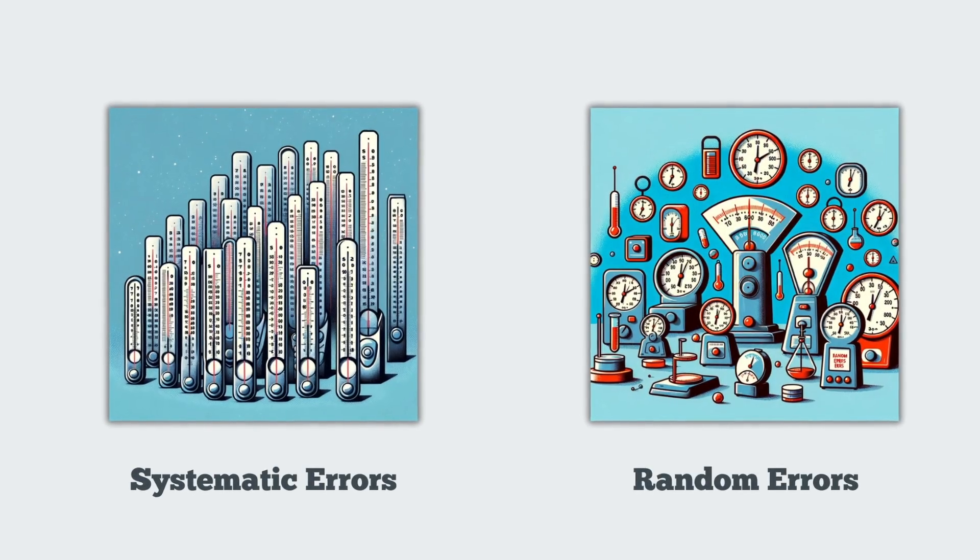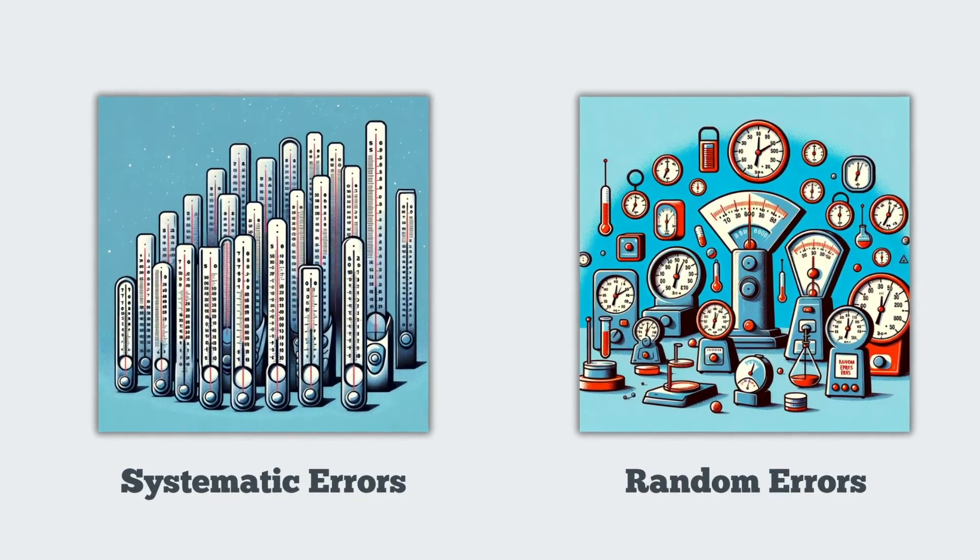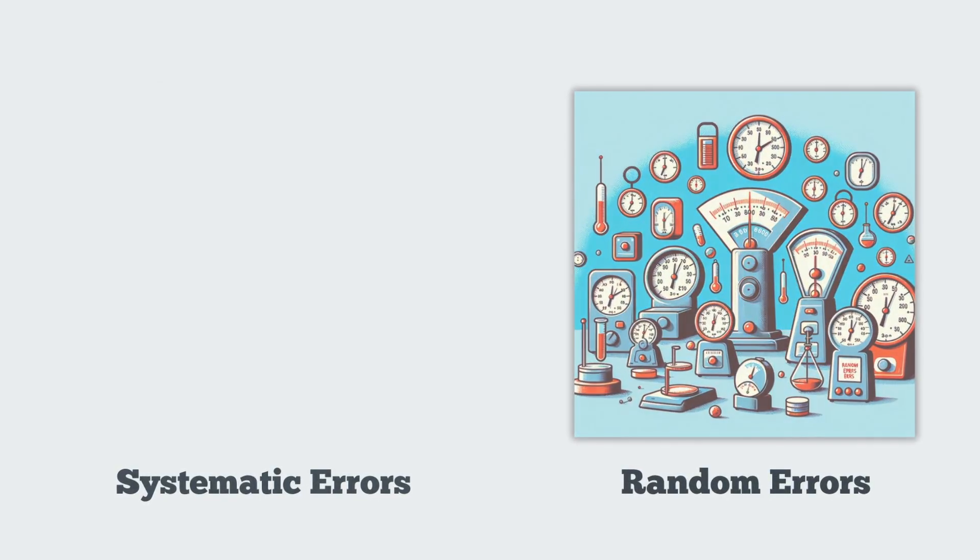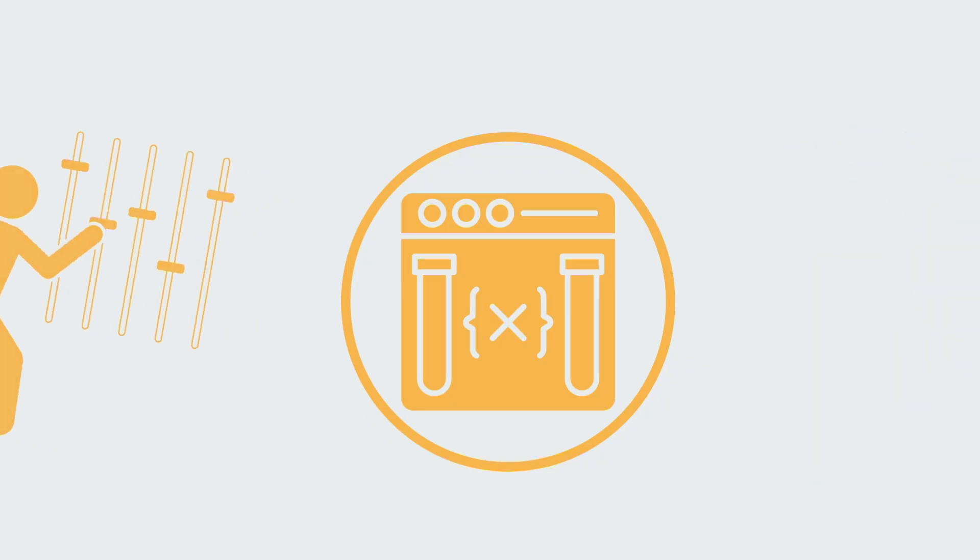In scientific research, errors are classified into two main types: systematic and random. Systematic errors are constant deviations that occur due to identifiable causes. These can be due to calibration issues in instruments, inherent flaws in experimental design, or consistent human biases in measurement techniques.